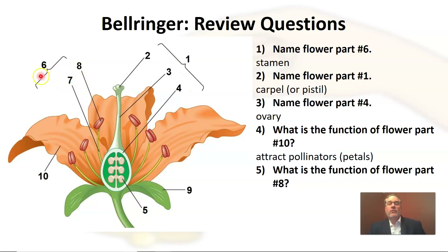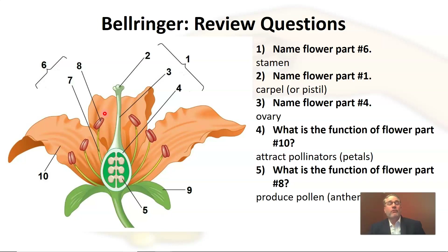What is the function of flower part number eight? Number eight is part of number six, so we know it's a male part. It's this little knob-like structure at the top which we call an anther. Its function is to produce pollen — it creates the male reproductive cell.